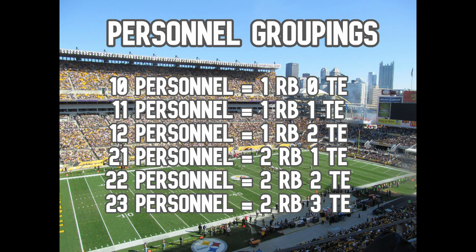Before we get into the tape, I'll put up on screen the basic personnel groupings and here's the way they're numbered. The first number — say in 12 personnel, the 1 — means how many running backs or fullbacks are on the field. The second number, the 2, signifies how many tight ends are on the field. From that, you can extrapolate how many receivers are on the field. There are 5 eligibles on the field every snap: your 5 offensive linemen, your quarterback — that's 6 — and 5 remaining eligibles. The groupings range from 11 to 21 to 22; you can even get 10 personnel, which would signify a 4-receiver set. You don't see that a ton in the NFL, but that's the numbering system.